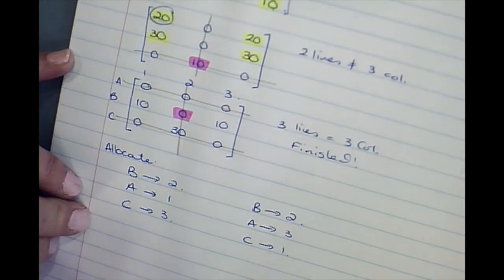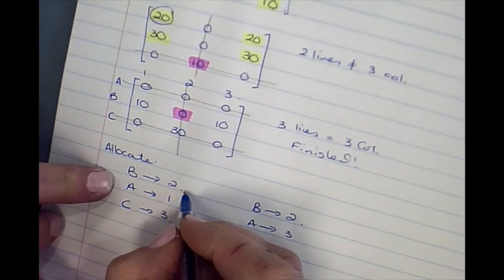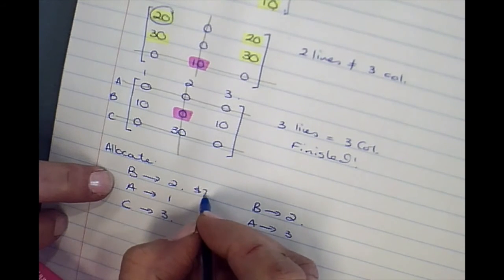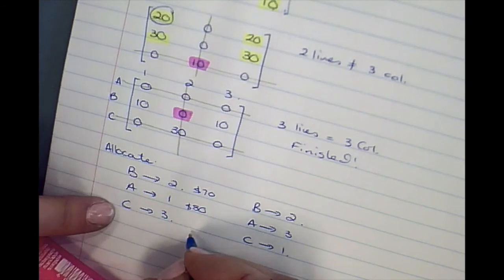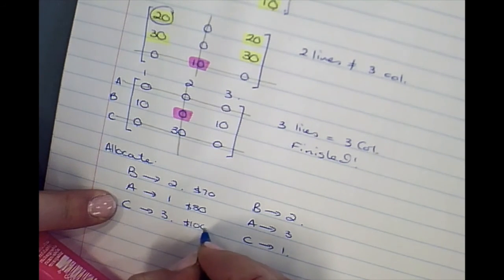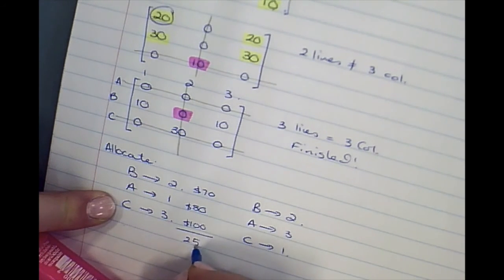And I'll just demonstrate that it doesn't matter because what it means is that the total cost will be the same. Here, the cost of this will be 70, A doing is 80, and that would be 100. So the total cost here will be 250.